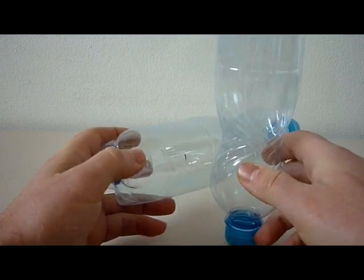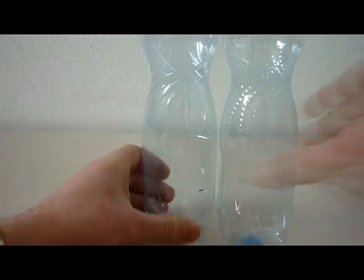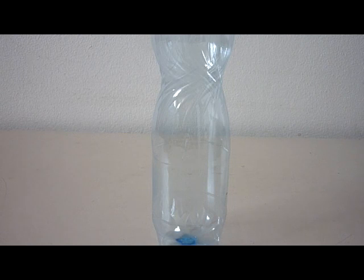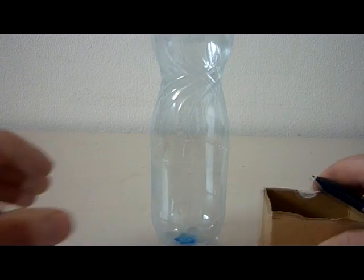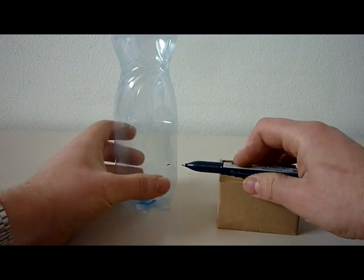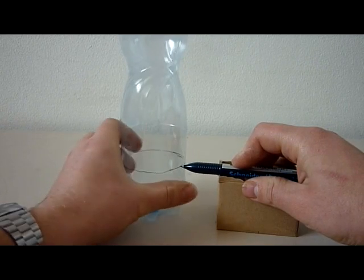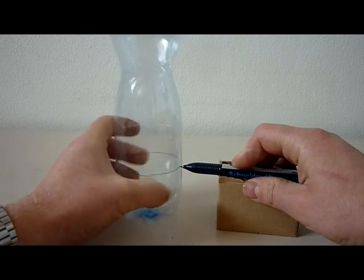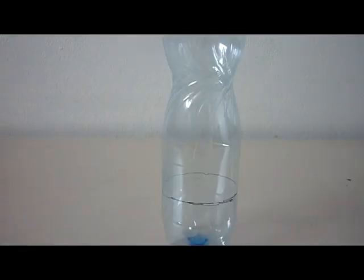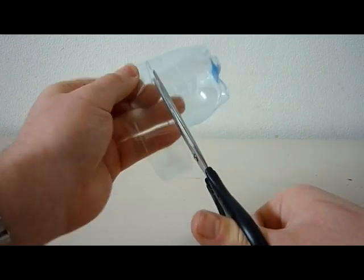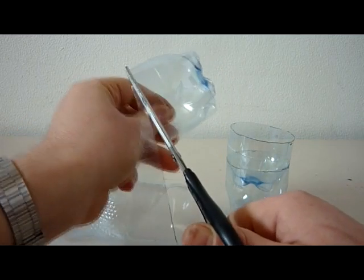Now mark the size of the bottom part of the bottle to prepare for cutting each three of them. I am using this little box to make sure that all three of them are exactly the same.